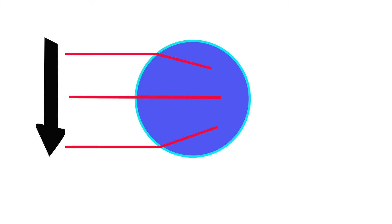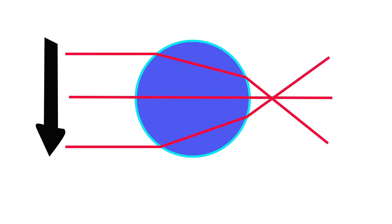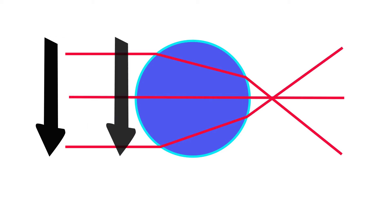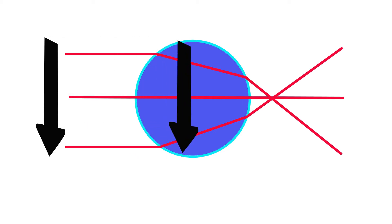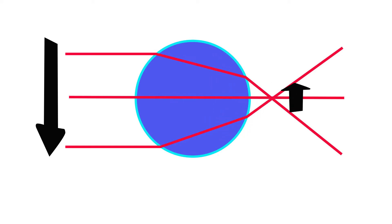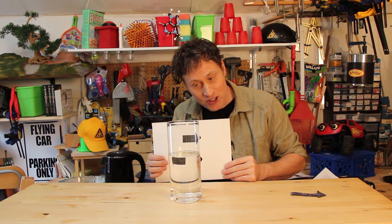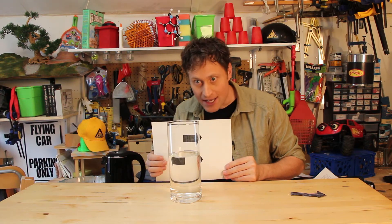Here's our arrow, and here are the light rays coming off it to our eye. Now, when you put a glass of water in between, the light rays bend. The head of the arrow and the tail of the arrow bend in towards the center. They cross over each other and open up again. But now the light from the head of the arrow is on the other side, and same with the tail.